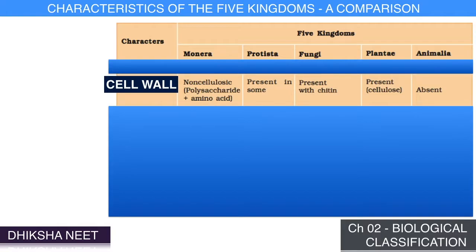In Protista, cell wall is present in some organisms and absent in many. In Fungi, cell wall is present and it is made of chitin. In Plantae, the cell wall is made of cellulose. In Animalia, cell wall is absent.